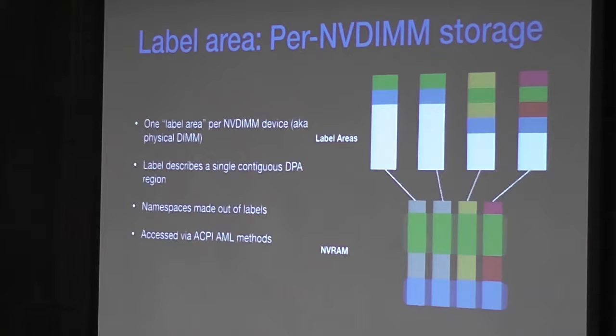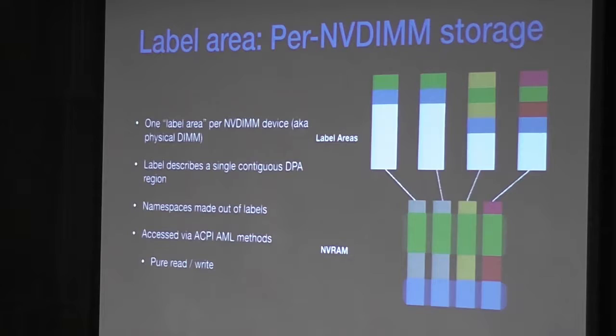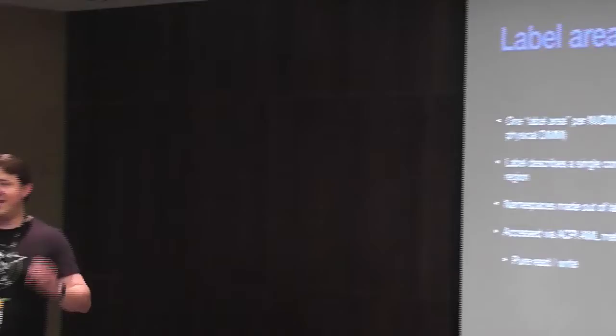Label areas are accessed via ACPI AML methods. The AML methods are pure read-write — any operating system can simply read or write the AML data, and it is not interpreted by the hardware or firmware in any way. In theory, just like a partition table on a disk, you could write whatever you want there. But the useful standard thing to do — just like most disks use a partition table — is to use this as a label area for NVDIMMs.